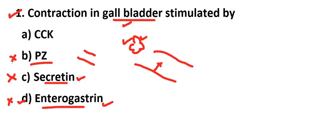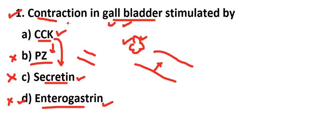Now we have option A - CCK, cholecystokinin. CCK is a hormone secreted by the mucosal lining of the duodenum. It stimulates the gallbladder to release bile juice, which helps in digestion. CCK also stimulates the pancreas to secrete pancreatic juice and enzymes. The main function of CCK is to contract the gallbladder. So the right answer for gallbladder contraction is CCK - option A.